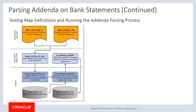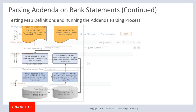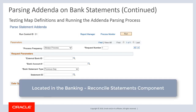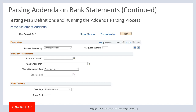For the final step in parsing addenda on bank statements, run the addenda parsing process. PeopleSoft recommends configuring and validating parsing rules in a test database before moving them into production. This diagram shows a high-level overview of the addenda parsing process. After the process completes, it populates the bank addenda table for addenda extracted from previous day statement lines. Use the Parse Statement Addenda run control page to run the process, which only looks at unreconciled statements and statements with a status of NTF, or not found in the system.